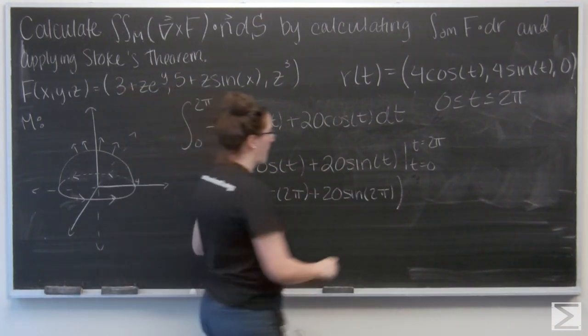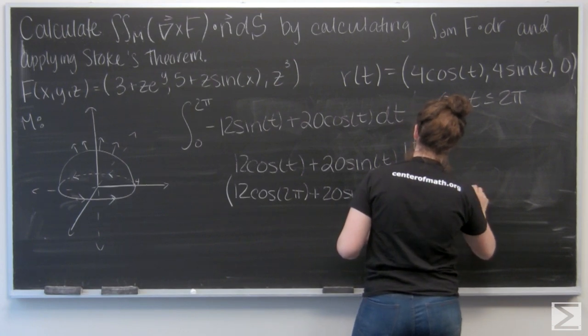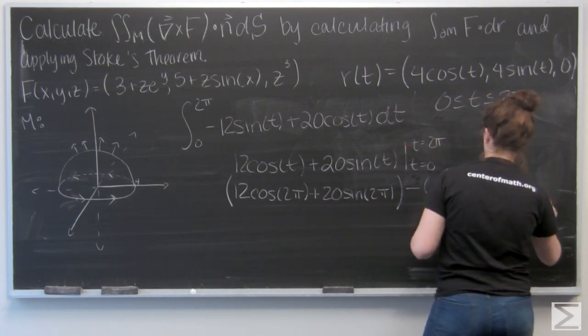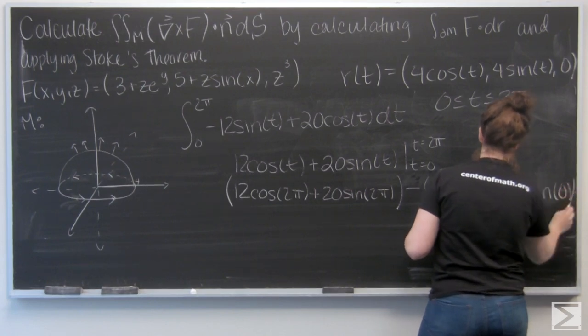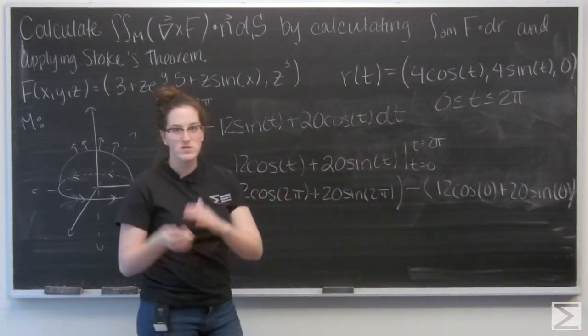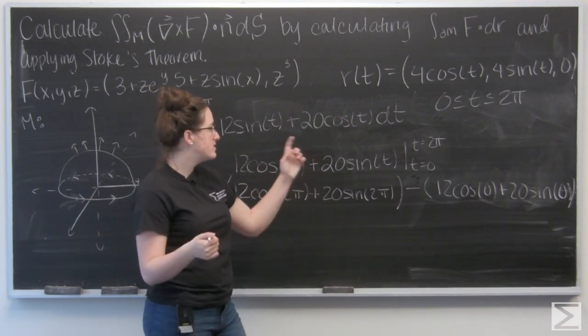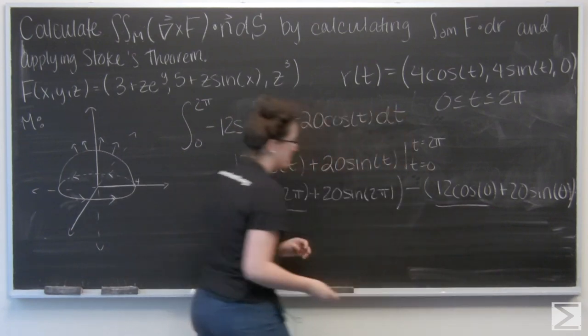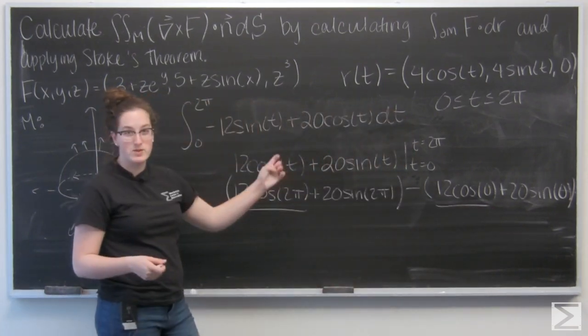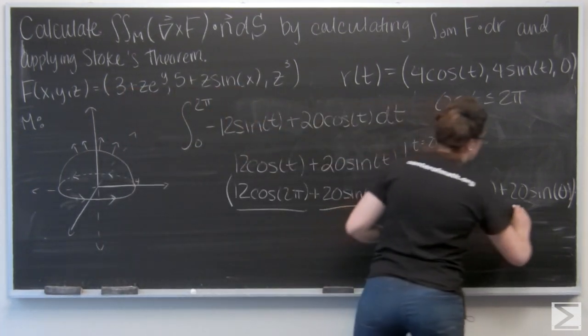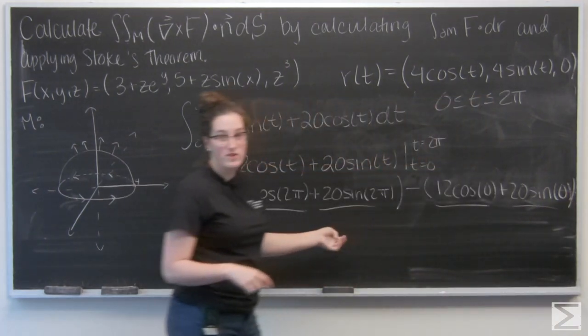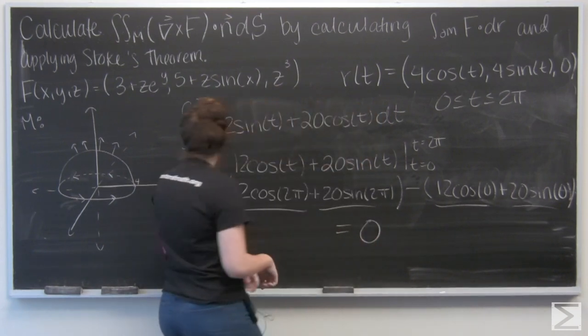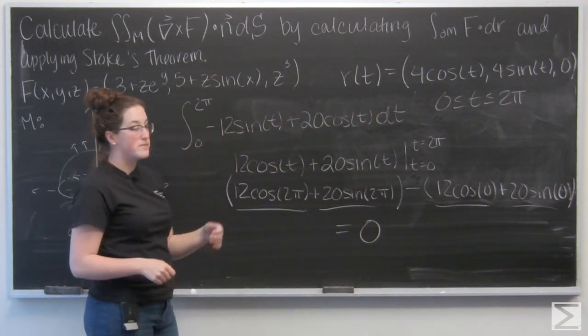And now let's plug in T equals 2 pi and T equals 0. Okay. Well, if we think about in terms of radians, 0 and 2 pi are actually the same angle. So my cosine terms are going to be the same and so are my sine terms. So without even plugging in, I know that this is going to be 0. So the flux of F through M is 0.